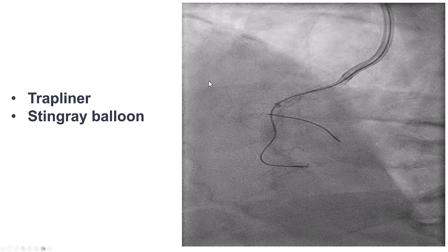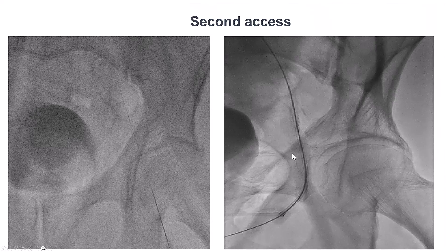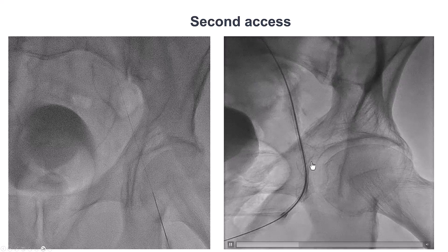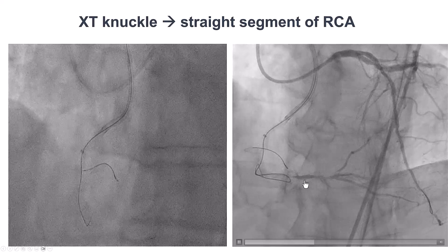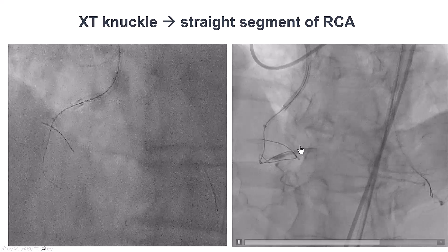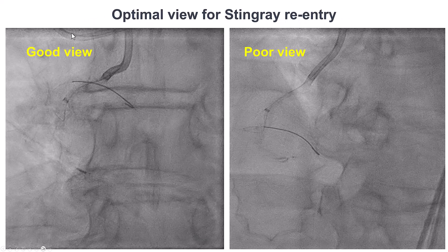We used a trap liner and delivered a stingray balloon. By this point we had lost visualization of the distal RCA and the PDA, so we obtained a contralateral femoral arterial access to visualize. We used a Filter XT to deliver the stingray balloon in the distal straight segment of the right coronary artery and oriented the view to allow optimal visualization. This is the view we like, in which the stingray appears as a single line rather than a tram track, confirming we are perpendicular to the exit points of the balloon.